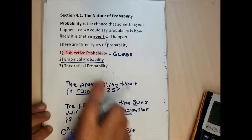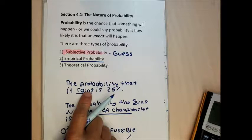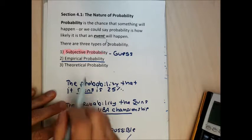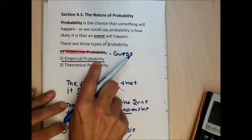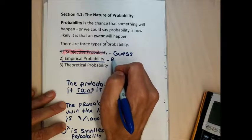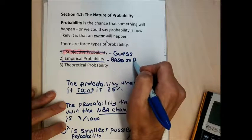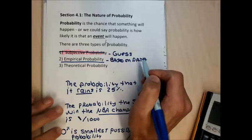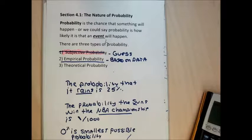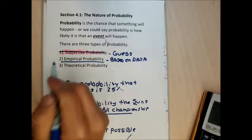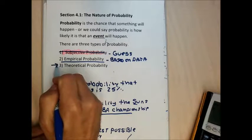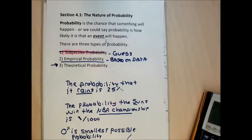That covers one of the three types of probability — the one that's test worthy. Subjective probability won't be on the test. Empirical probability is based on data that's been collected, and it's probably not the most important of the probability types. The most important probability is what we do last, and that's going to be the focus of most of the chapter.